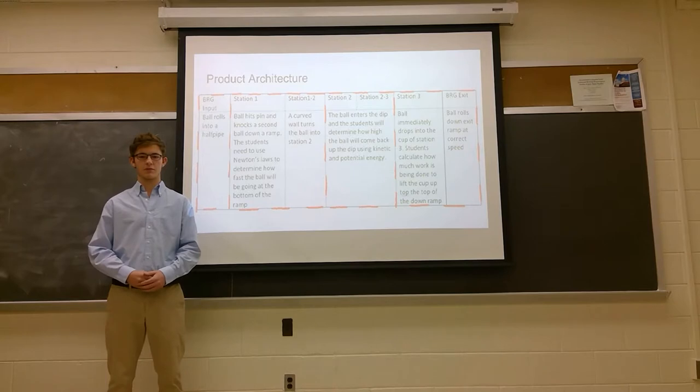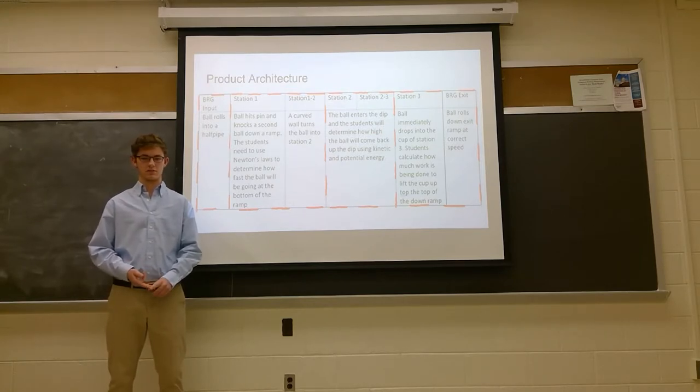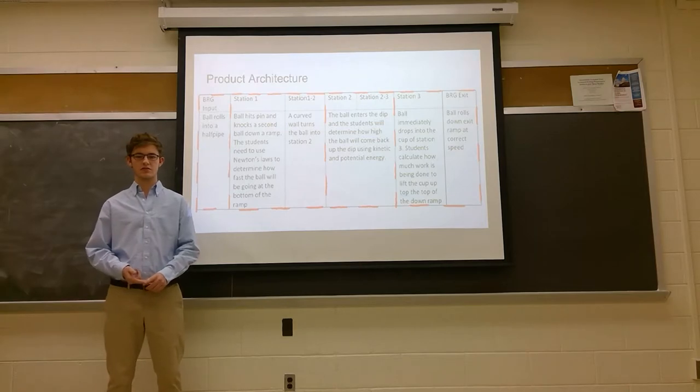There are four chunks of our BRG. There is the half pipe that brings the ball into the station, which is Station 1, which is the first chunk. The second chunk is Station 1 and the turn that connects Station 1 and 2. They work together by creating and then conserving the energy and speed required for Station 2. There is no connection between Station 2 and 3, so Station 2 is its own chunk.